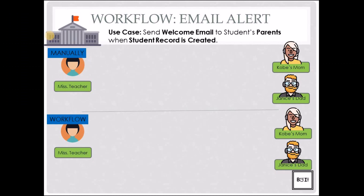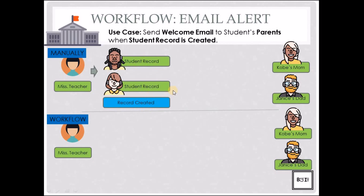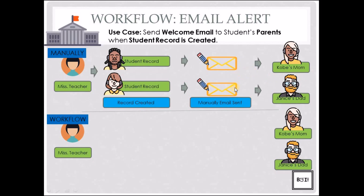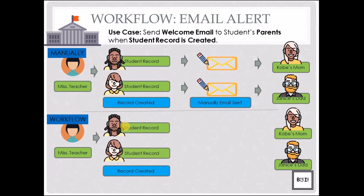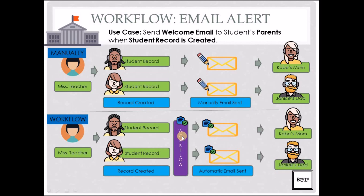Now that we know what a workflow rule and field update action is, let's see what an email alert action is. We're going to check out a use case where we send a welcome email to the student's parents when the student record is created. The school is understaffed, and after record creation, Miss Teacher needs to send welcome emails to individual parents — which is extremely time consuming. The administrator can create a workflow so that when the student record is created, it automatically sends emails to the student's parents, handling email delivery so Miss Teacher only has to create the records.